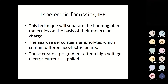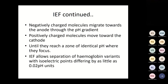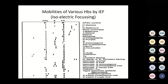Isoelectric focusing separates haemoglobin molecules based on molecular charge. The agarose gel contains ampholytes with different isoelectric points — molecules containing both acid and basic groups — which create a pH gradient when high voltage is applied. Negatively charged molecules migrate towards the anode and positively charged molecules towards the cathode until they reach a zone of identical pH where they focus. Isoelectric focusing allows separation of haemoglobin variants with isoelectric points differing by as little as 0.02 pH units. It is a specialised technique not performed at many places, but allows simultaneous analysis of many samples on a large gel.